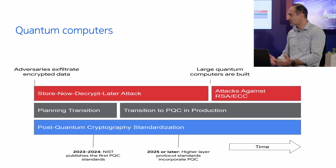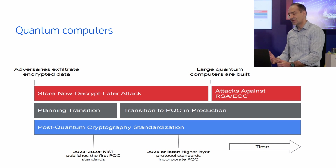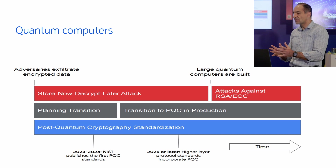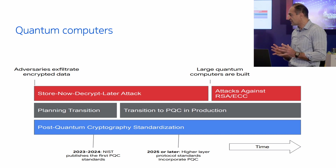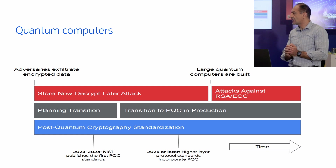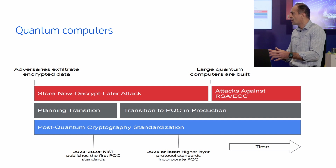Now, these quantum computers are not available to every single company or government because they are still experimental. That said, we are still worried — in government entities, federal governments, utilities — that there might be an attack vector for some rogue entities. One of these attack vectors is: today there is a lot of traffic on the internet and even on private networks. What if some of these rogue entities start caching this traffic by mirroring it into servers and storing it on large databases, and when quantum computers become available five or ten years down the road...